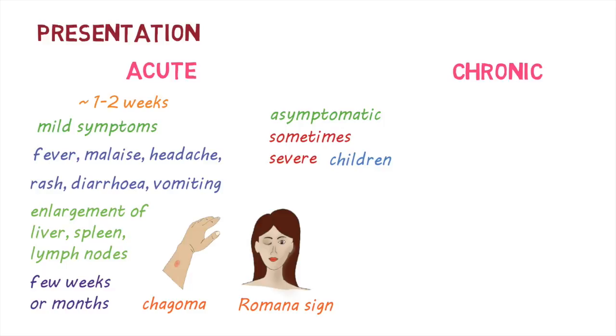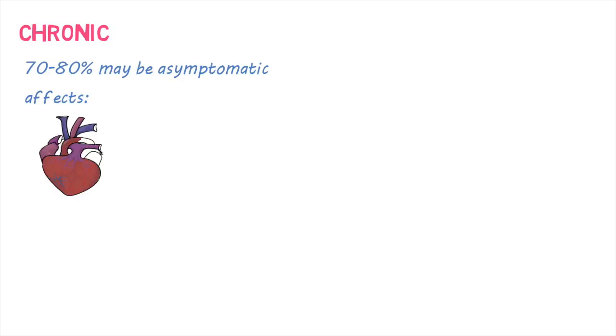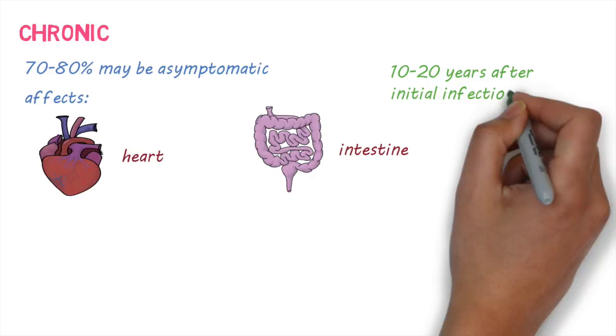The disease then moves on to the chronic phase. In this phase, about 70 to 80% of people may not show any symptoms at all. However, in about 20 to 30% of people, the disease can progress, mainly affecting the heart or the intestine. This can happen 10 to 20 years after the initial infection.